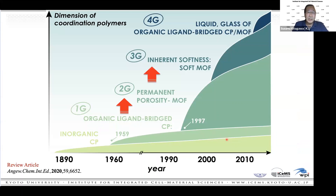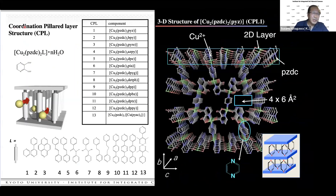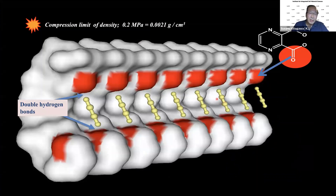Moving to 3G compounds, I want to highlight acetylene sorption — an explosive and dangerous gas. We synthesized a pillared-layer structure called CPL. The CPL is constructed from pyrazine dicarboxylate and copper to give a layer structure, linked by a pillared ligand. By choosing a very small pillared ligand — pyrazine — we get a channel cross-section of 4 by 5 Ångströms. Acetylene molecules are accommodated, and we determined the crystal structure using a CPK model of the channel cross-section.